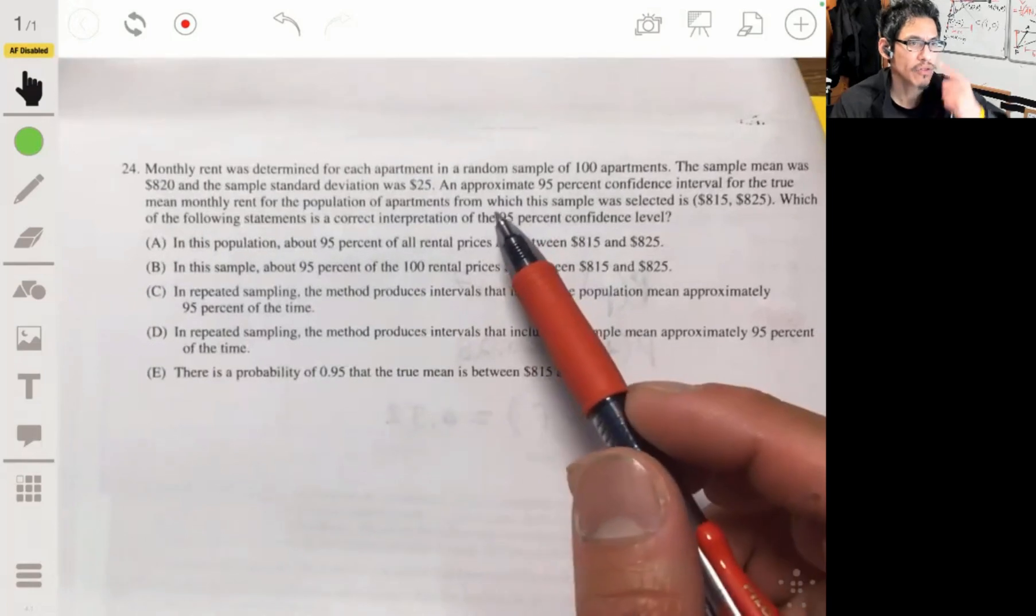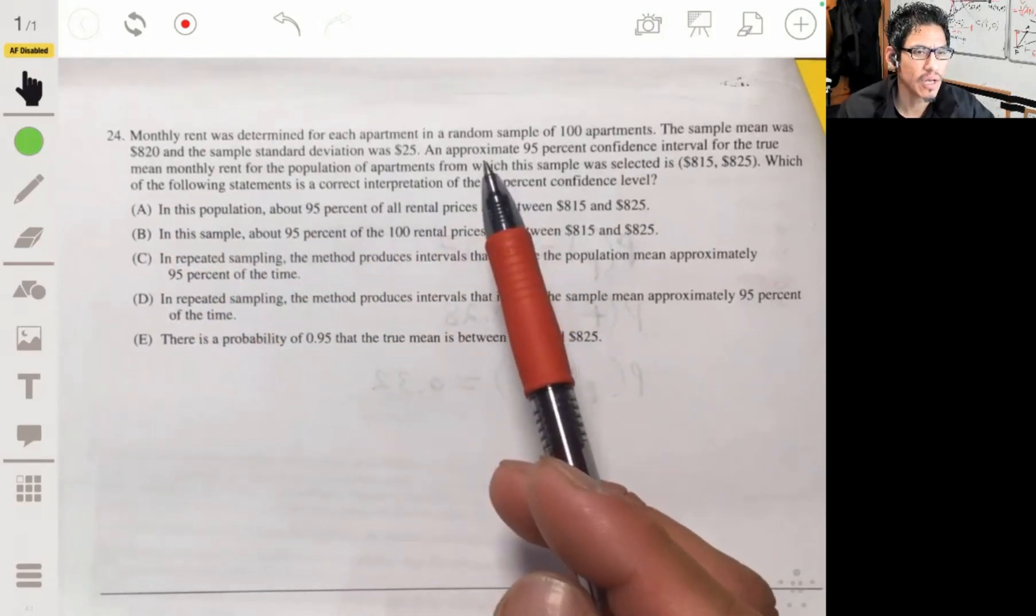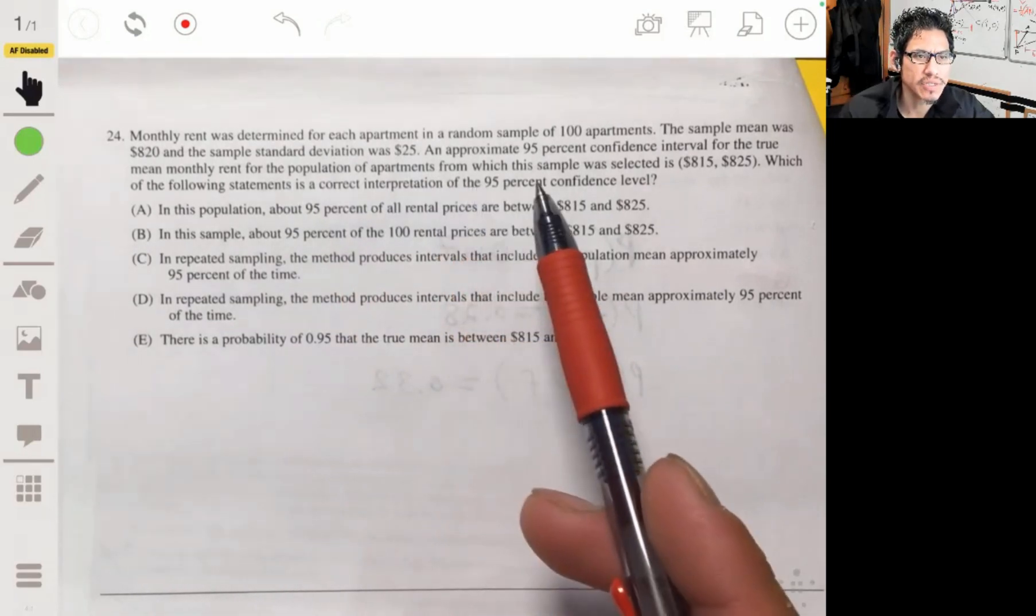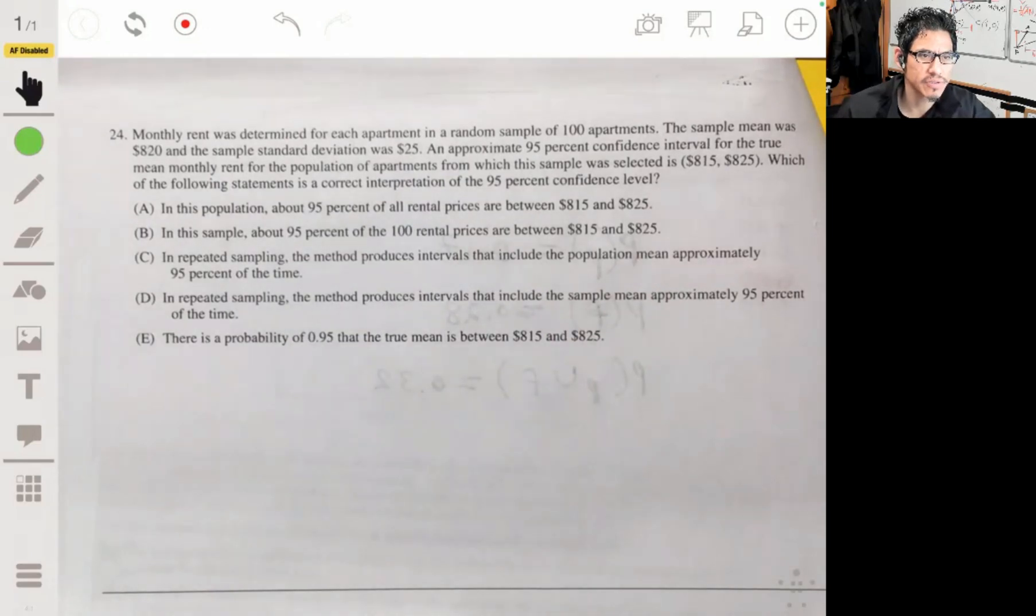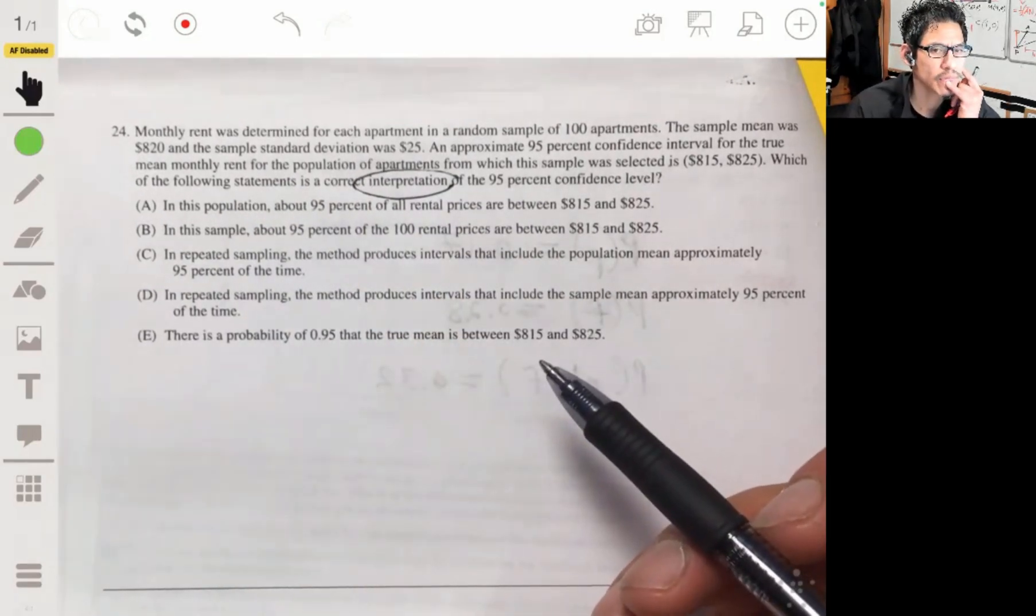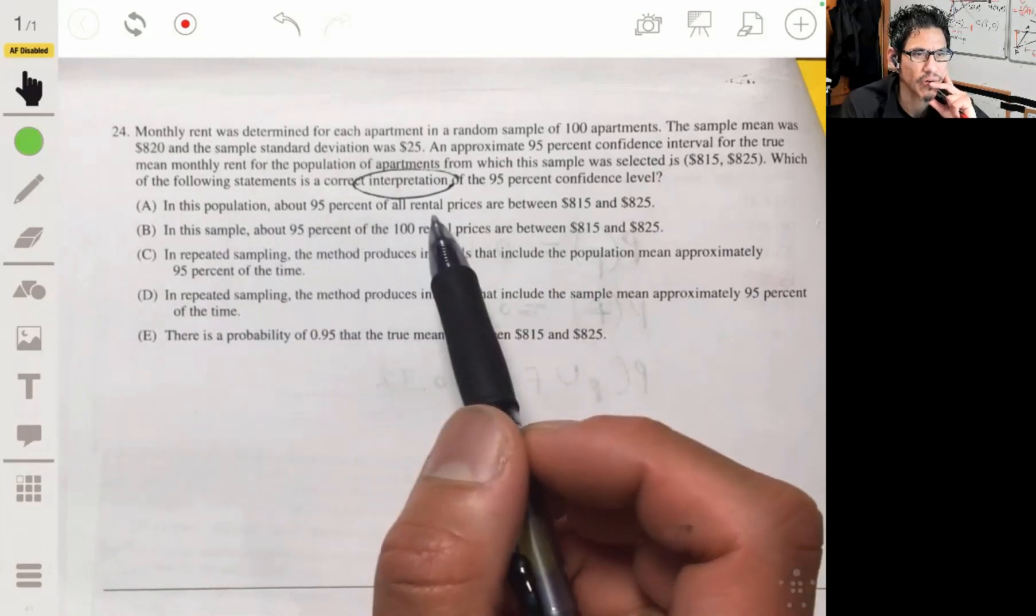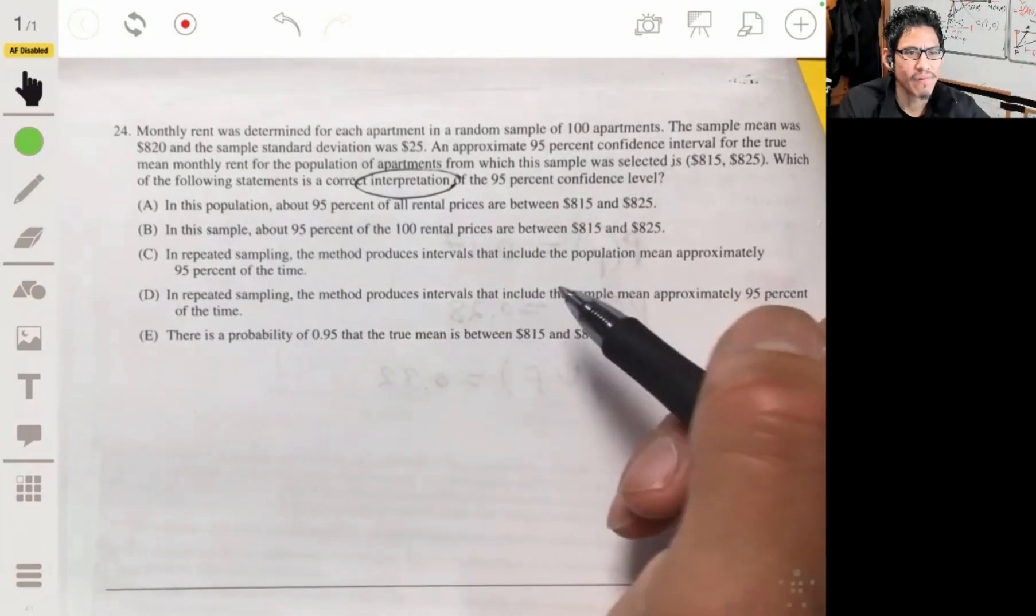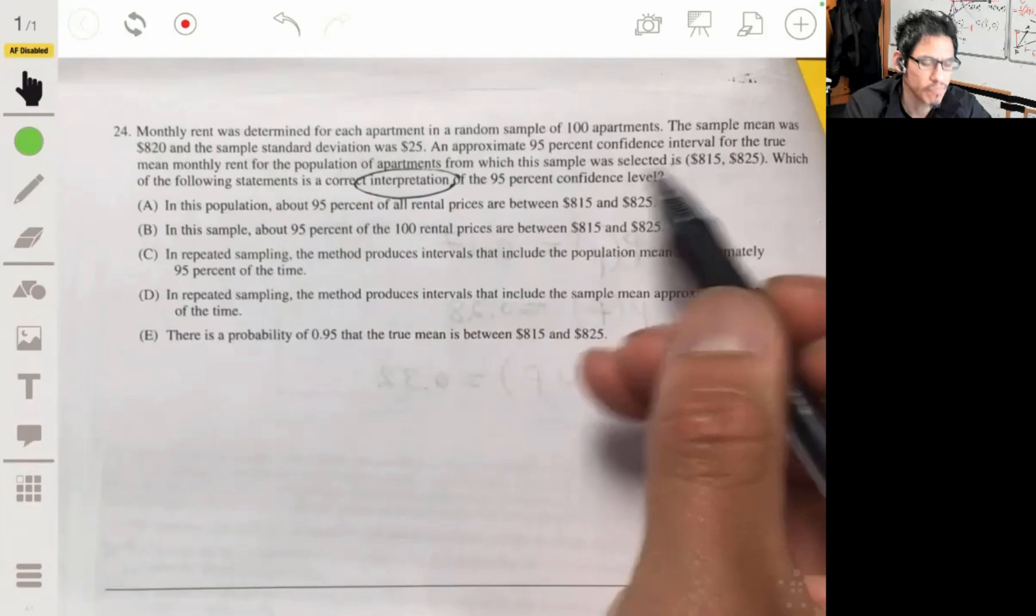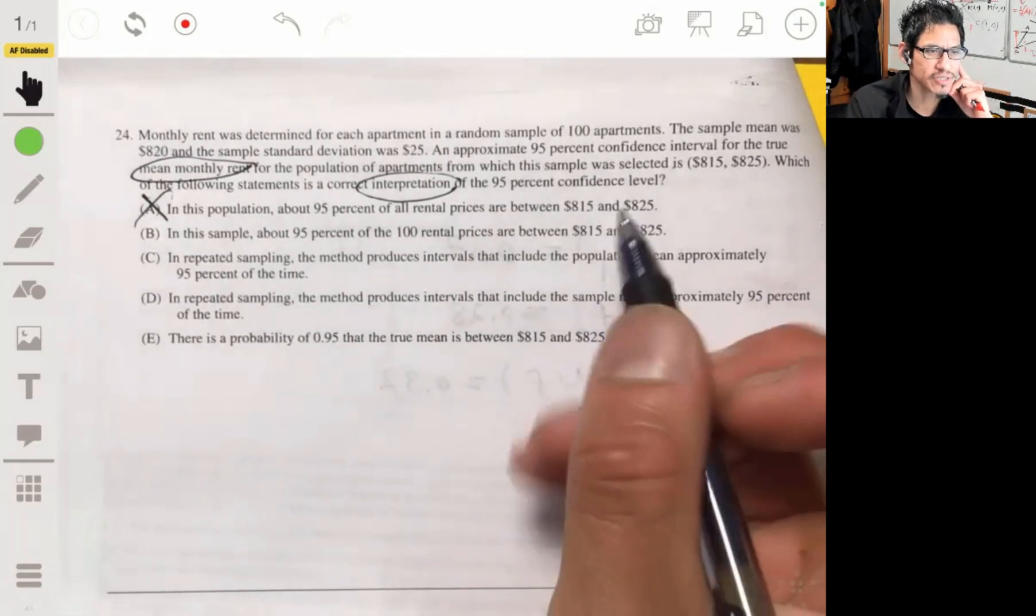24. Monthly rent was determined for each apartment in a random sample of 100 apartments. The sample mean was $820, and the sample standard deviation was $25. An approximate 95% confidence interval for the true mean monthly rent for the population of apartments from which the sample was selected is $815 to $825. Which of these is the correct interpretation of a 95% confidence interval? Okay, well, I guess I can just go through them and tell you why it's correct or not correct. A, in this population, about 95% of all rental prices are between $850.